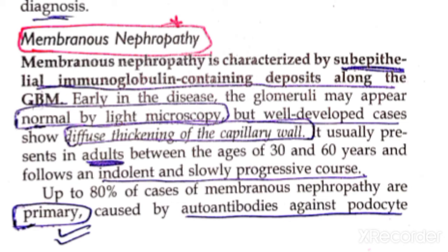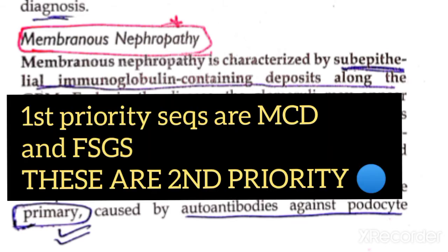We started nephrotic syndrome and we had two diseases that were important from an exam point of view: minimal change disease and focal segmental glomerulosclerosis. Now let's talk about the less commonly tested diseases — just MCQ concepts.